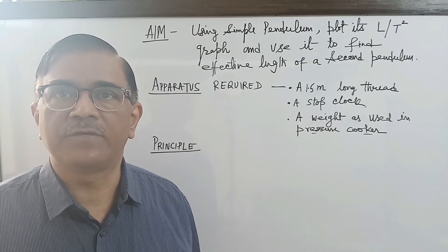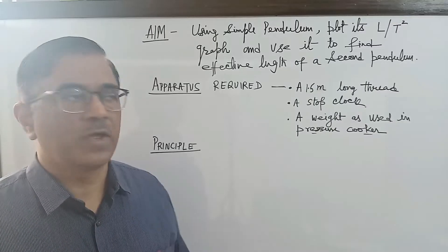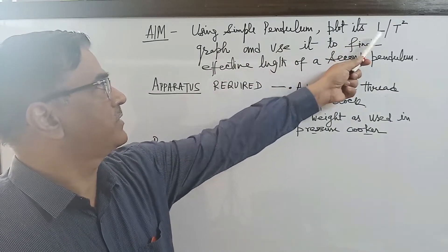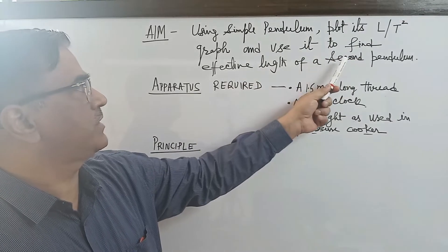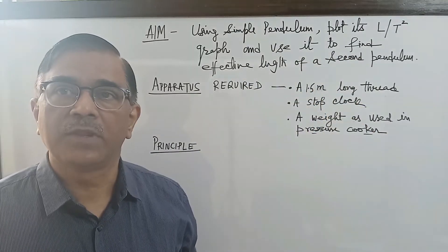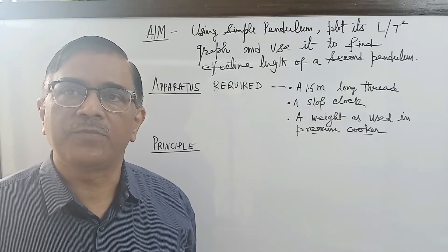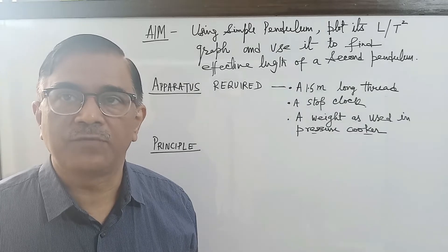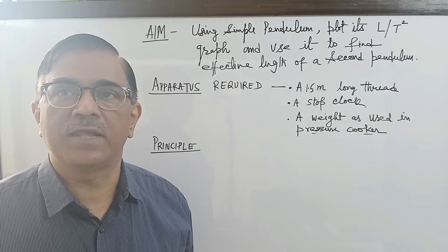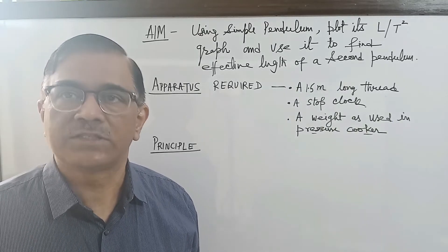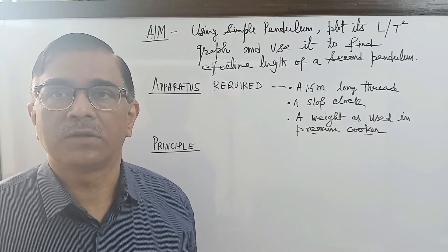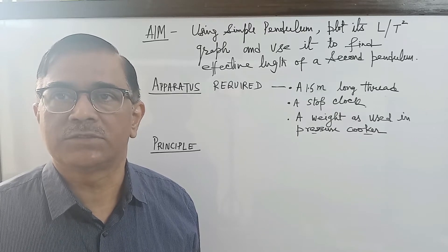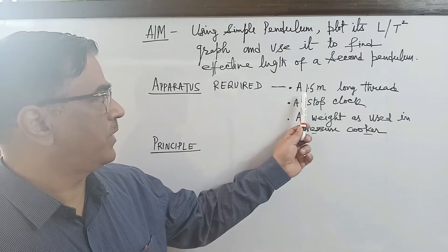As prescribed in the CBSE syllabus, the experiment is: using a simple pendulum, plot its L versus T graph and use it to find the effective length of the second pendulum. The second pendulum is a simple pendulum with a time period of two seconds, so we are supposed to find its effective length.